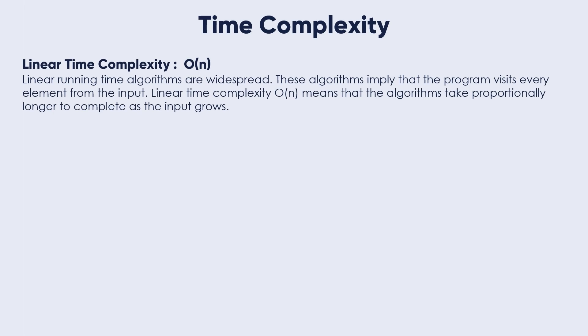The next time complexity is the linear time complexity O of N. Linear running time algorithms are widespread. These algorithms imply that the program visits every element from the input. Linear time complexity O of N means that the algorithms take proportionally longer to complete as the input grows. This is very important. As the input grows, the algorithm will take more time to be complete.